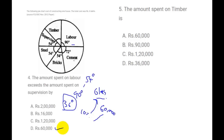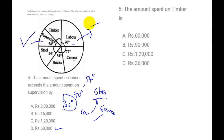So the answer is 60,000. We can use shortcut methods — 36 out of 360 is 10%, and 10% of 6 lakhs is clearly 60,000. Answer is option D. We can solve these problems quickly using shortcut methods.